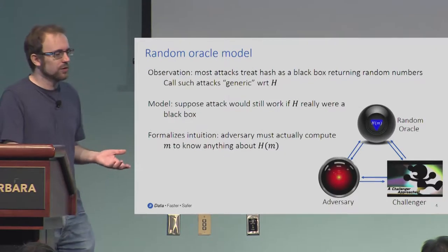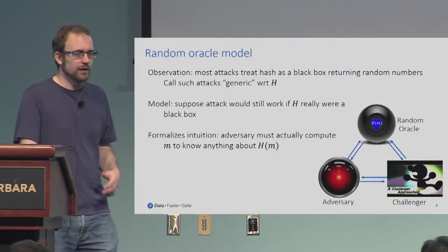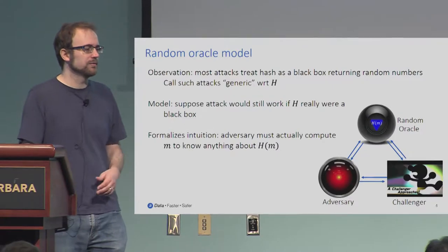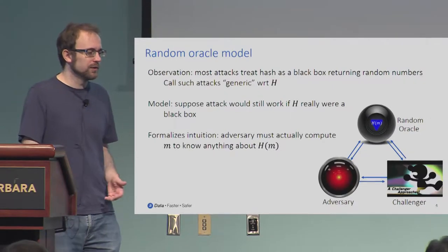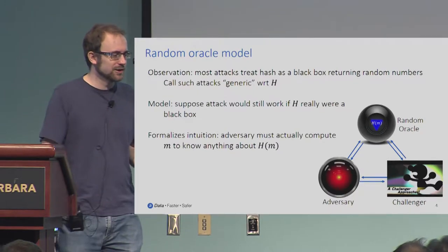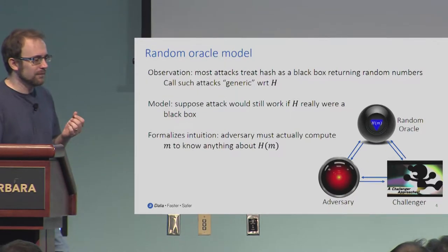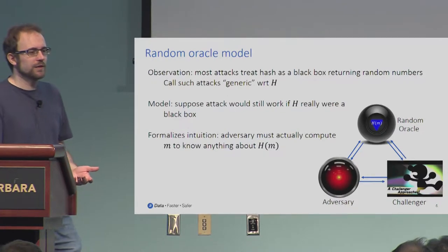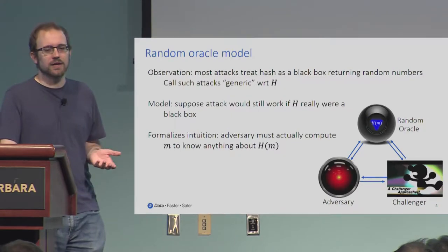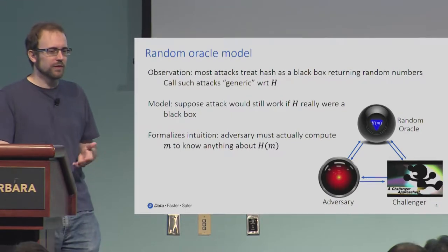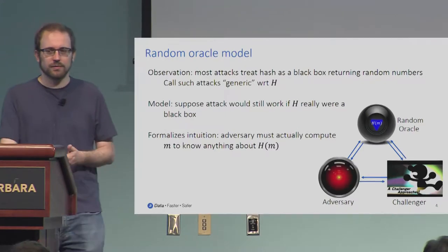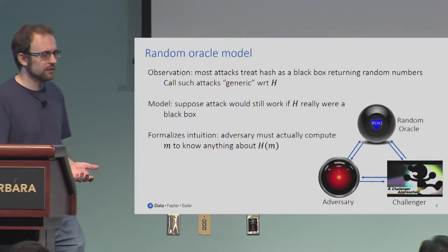You know how the random oracle works — most attacks either are attacking a hash function or treating it as a black box that returns random numbers, so you might call them generic. You suppose that the attack would still work if the hash function really were a black box or a magic eight ball or something. This formalizes a lot of intuition when designing a protocol, such as the attacker can't know anything about the hash of a message without actually knowing what that message is. It also allows you to extract the message because it has to be presented as an oracle query before the adversary knows anything about it.